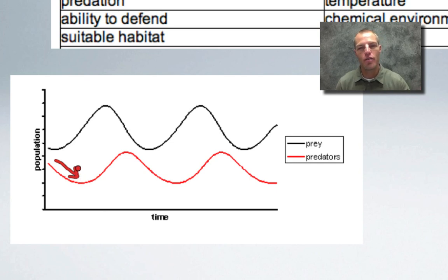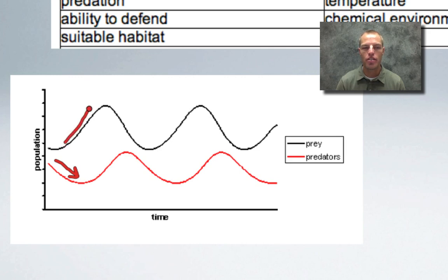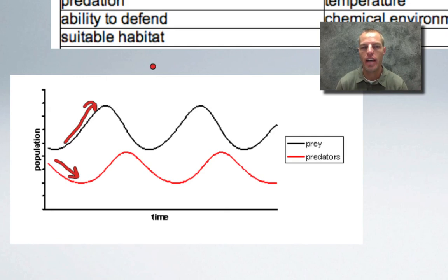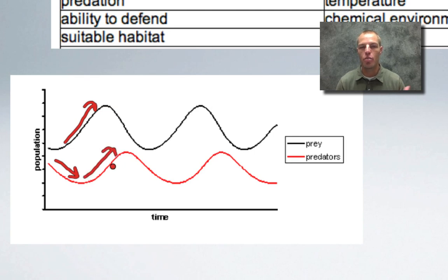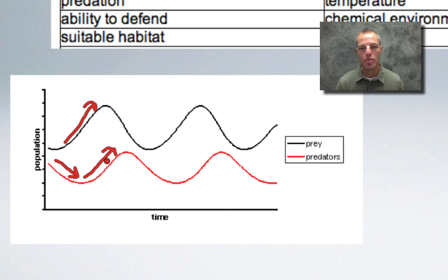When wolf numbers decline, that's good for the rabbit — the rabbit population starts to grow exponentially, trying to reach its biotic potential. But with predator-prey relationships, it always works back and forth. As prey increases, there's now plenty of food for wolves, so the wolf population starts to increase again because the limiting factor of not enough prey has been removed.